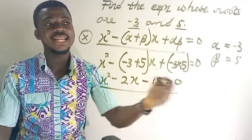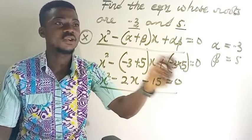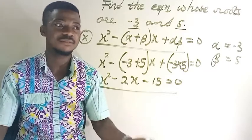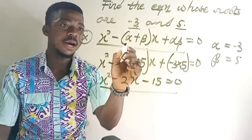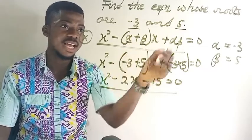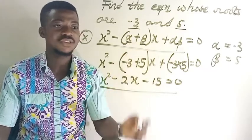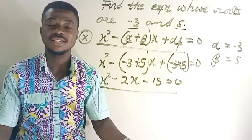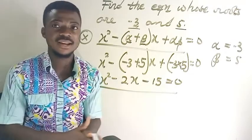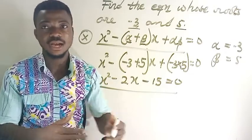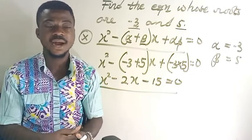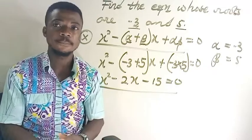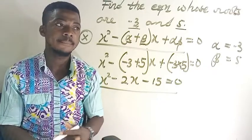Whenever you have a question like this, just write down the control equation, then fix in the values of alpha and beta, and draft the equation the question asks you to find. Now let's do another example — a more complex one.